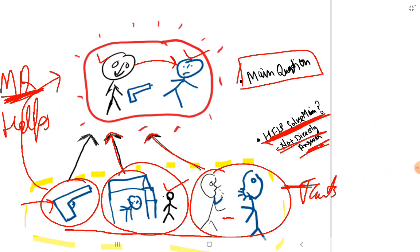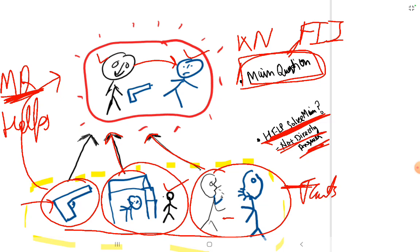The main question here — whether Kalu has killed Nilu, true or false — is known as the 'fact in issue.' This is the main question, the fact in dispute. It is true or not? This is the main fact, also called the principal fact.